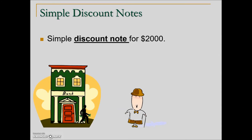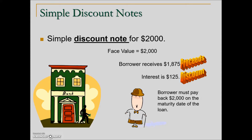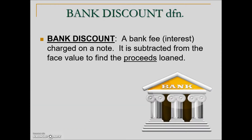A simple discount note for the same amount has a face value of $2,000, but initially when the loan starts the borrower receives $1,875. This is referred to as the proceeds. The interest on this loan is $125, just like in the last one. This amount is called the discount, and at the due date the borrower pays back $2,000 — the maturity value. A bank discount is a bank fee or interest charged on a note, subtracted from the face value to find the proceeds of the loan.